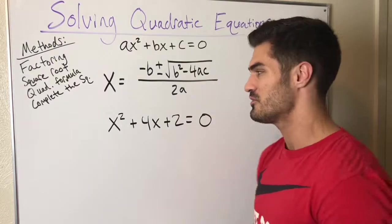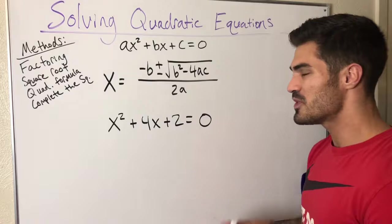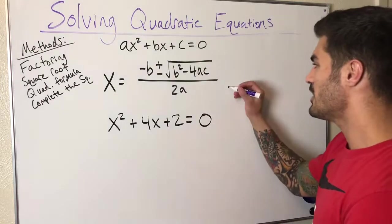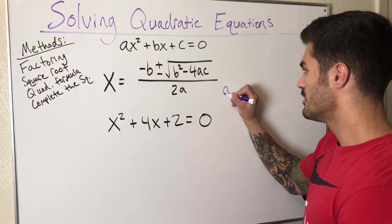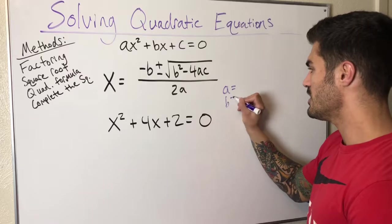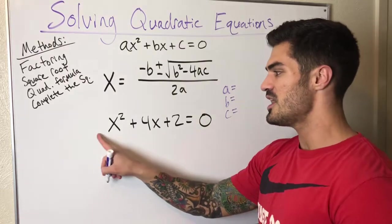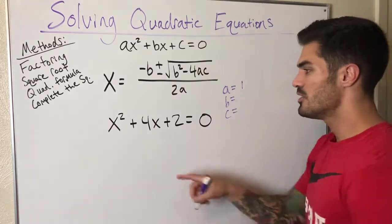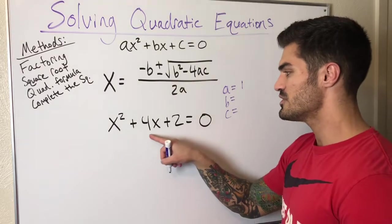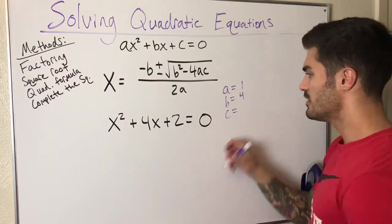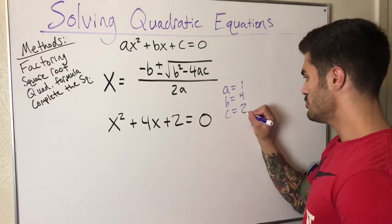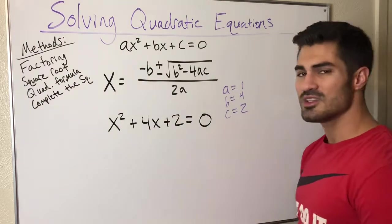So this is when I'm going to use my quadratic formula. The first thing I do, especially when we're still learning this, is write out what a, b, and c are. In this case, my a is this leading coefficient, that's 1. My b is the coefficient in front of the x, that's 4. My c is this constant, that's 2.